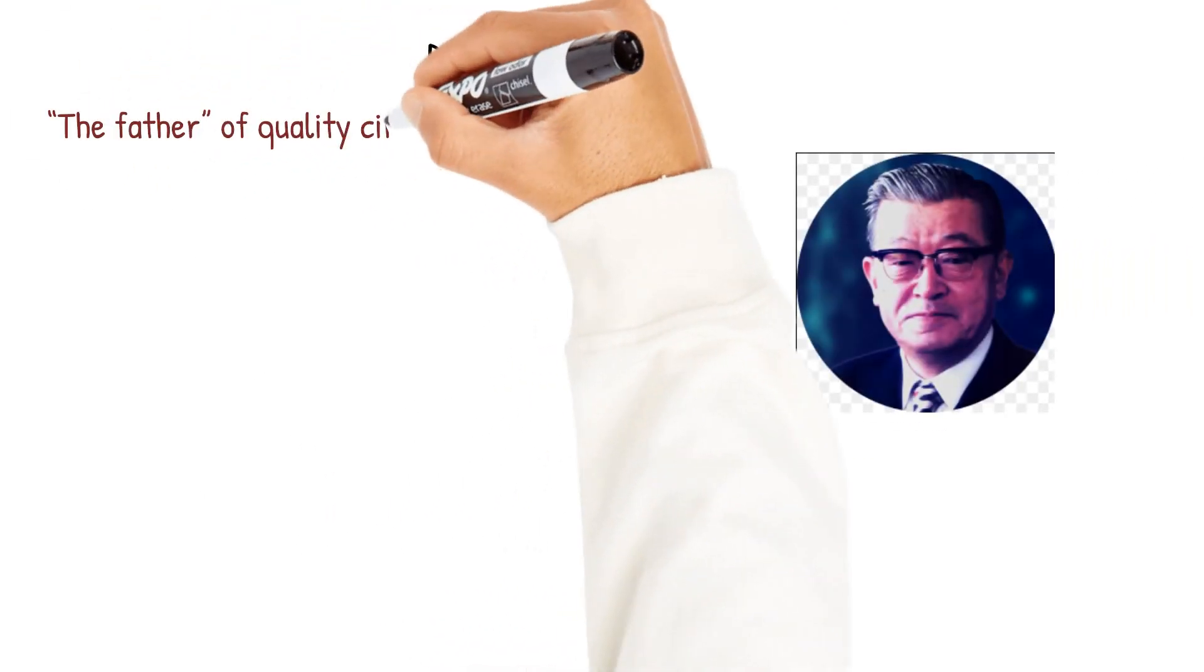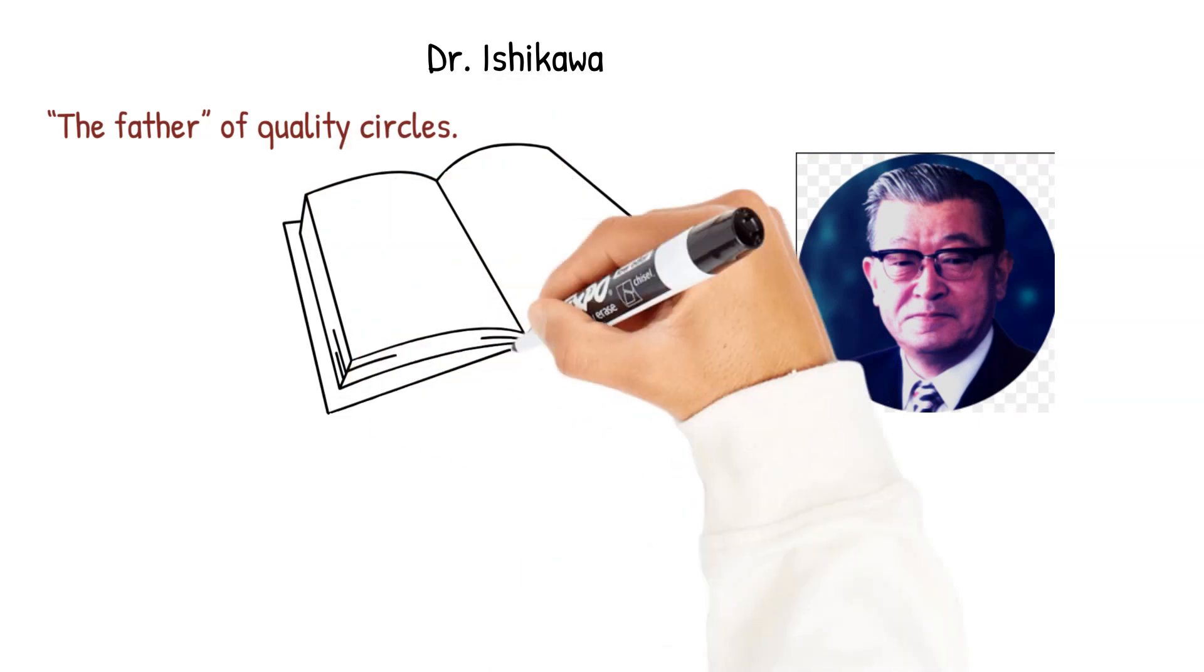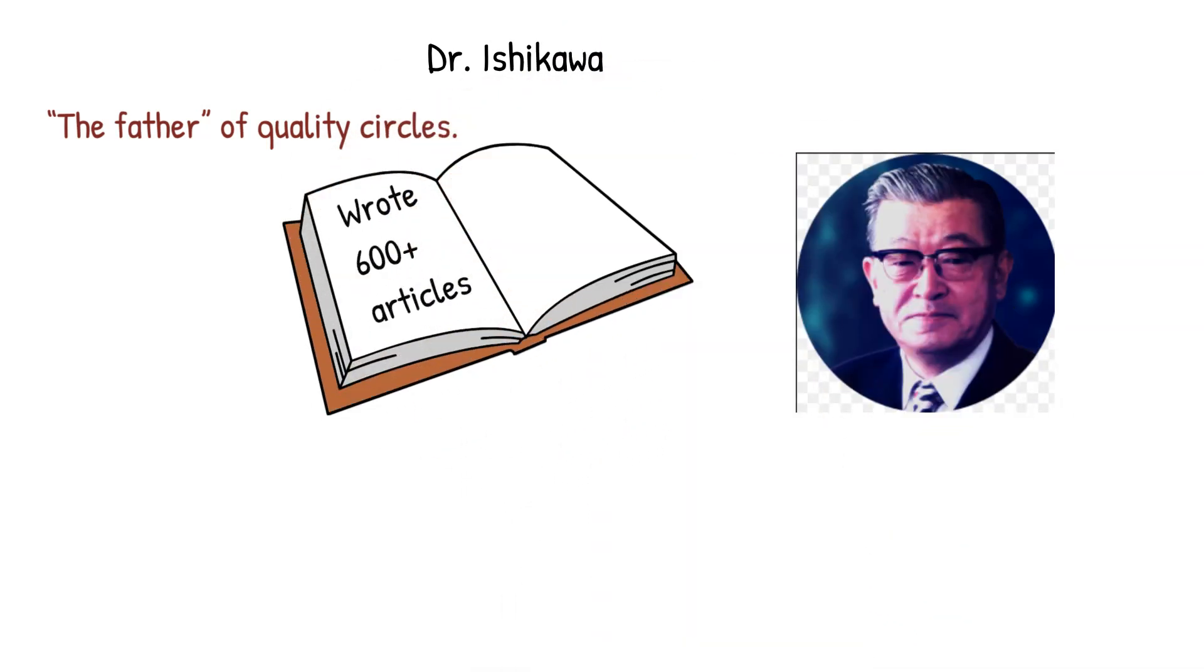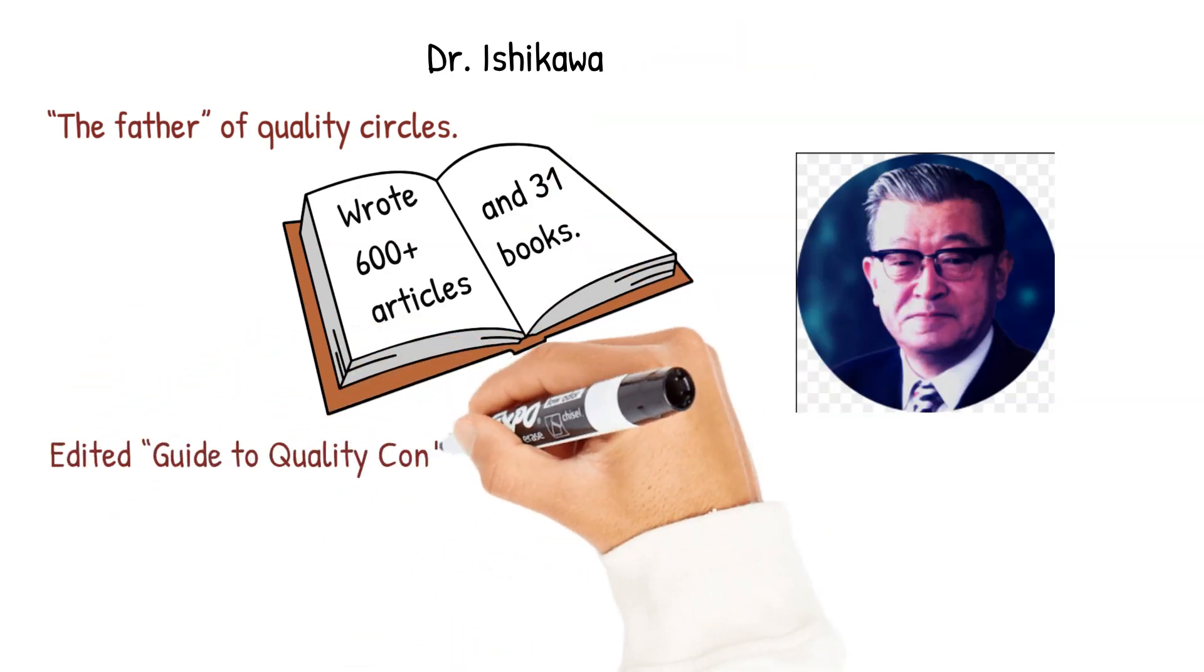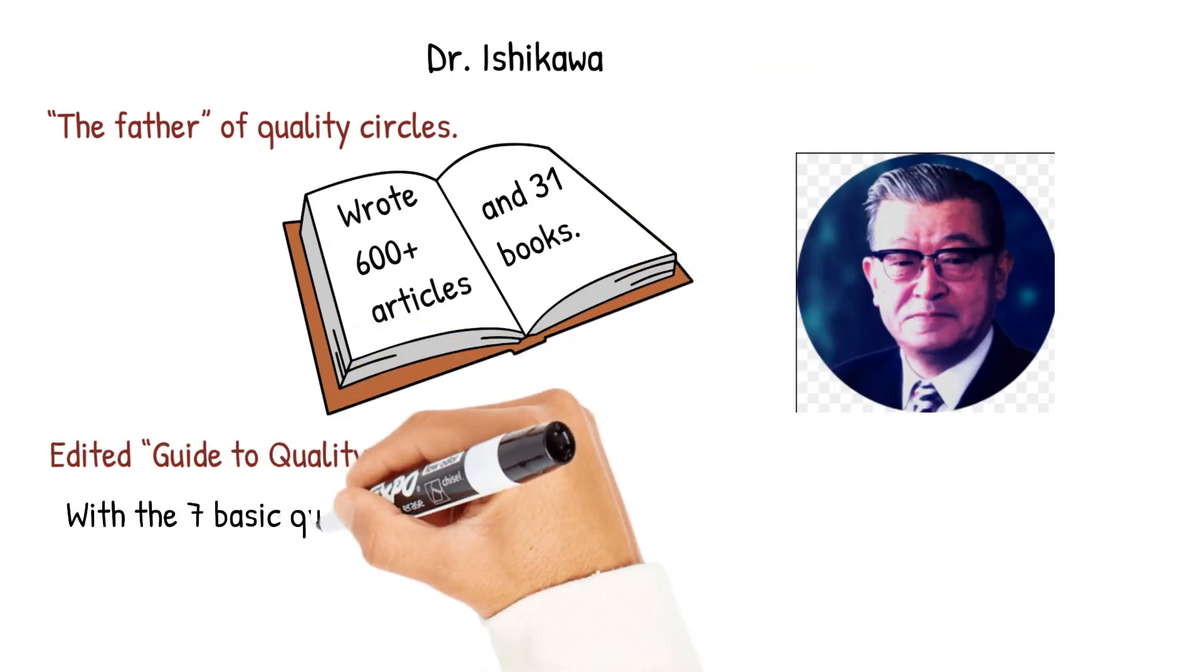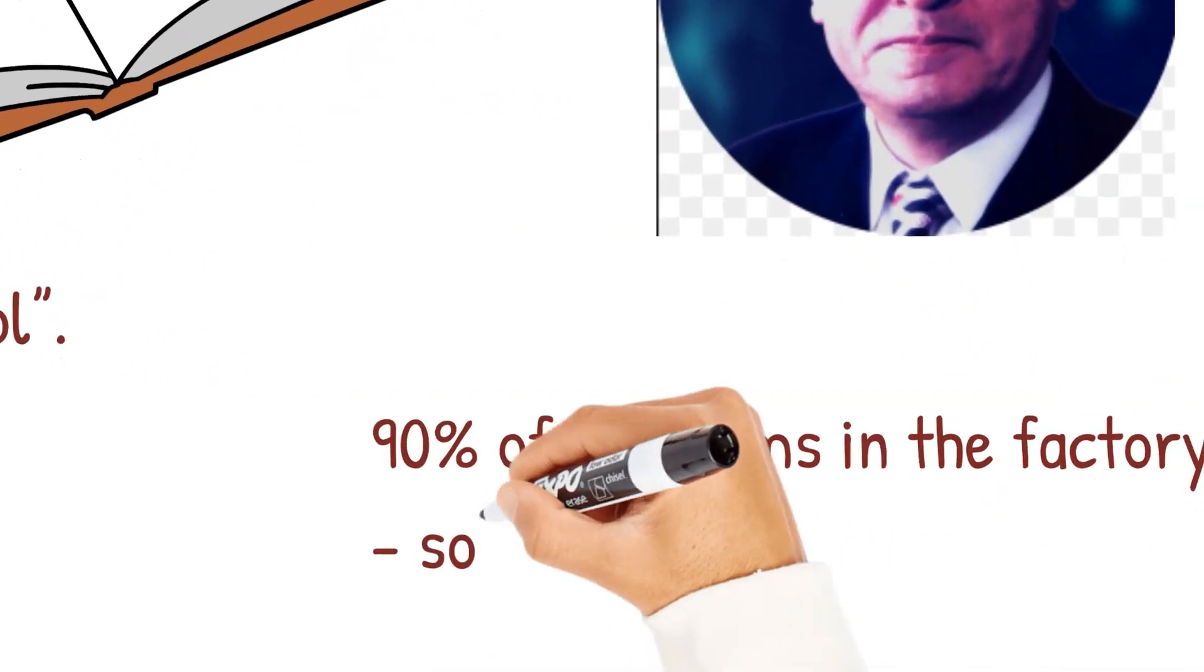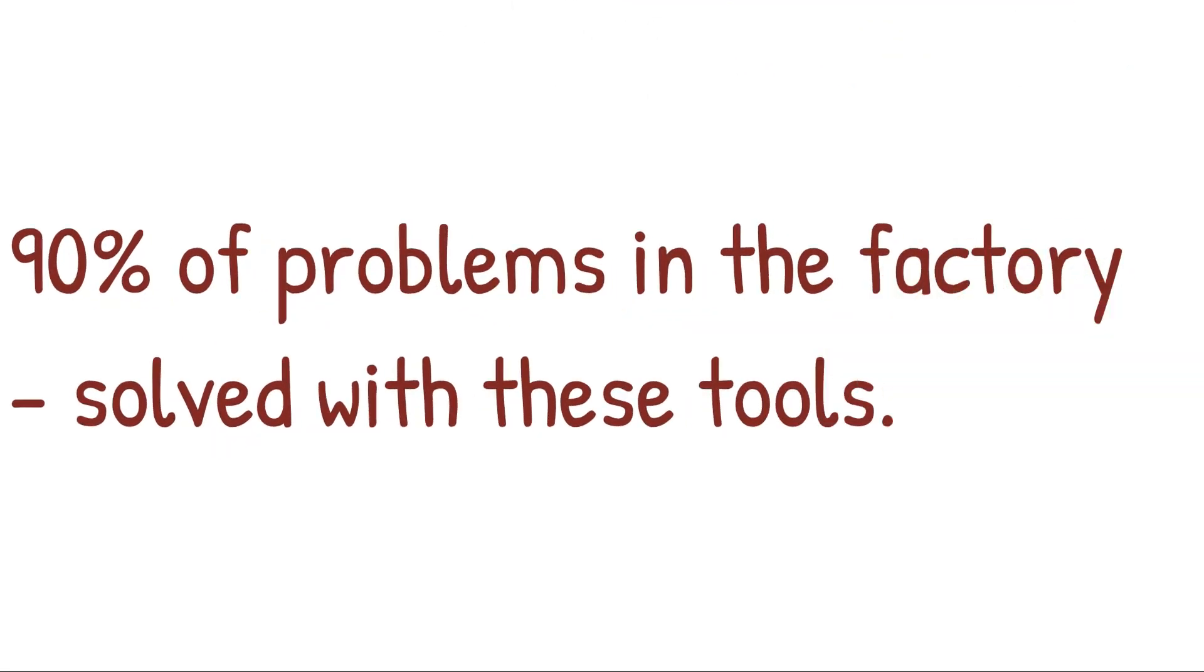Well, here's where Dr. Ishikawa comes in. He was the father of quality circles. He wrote over 600 articles and 31 books. He was also editor of the guide to quality control and in this guide he introduced the seven basic quality tools. We're going to look at those in this video and Dr. Ishikawa said you can solve 90% of the problems in the factory with these simple tools.